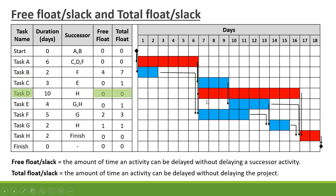Task D is one of our activities on the critical path, so it has 0 free float and 0 total float. Task E has 0 free float, and is connected to G, which connects to H with 1 day of float. So the total float on Task E is 1 day before it will have an impact on the project.